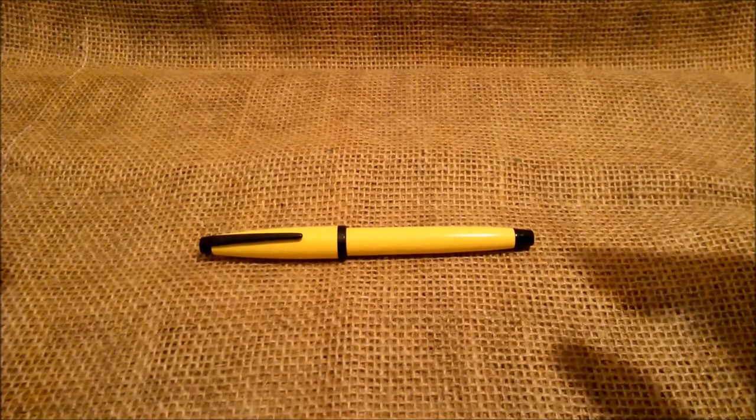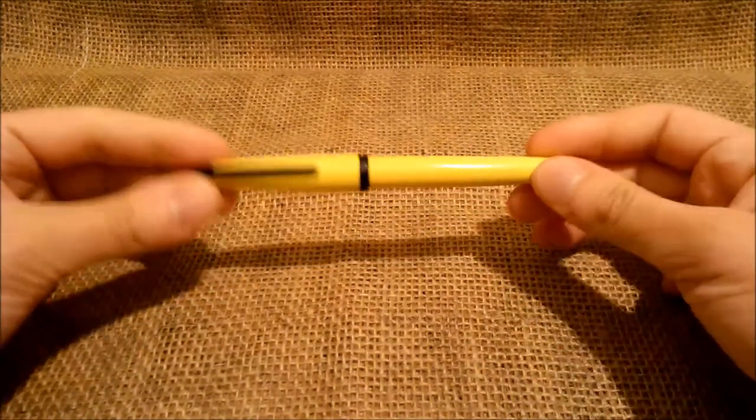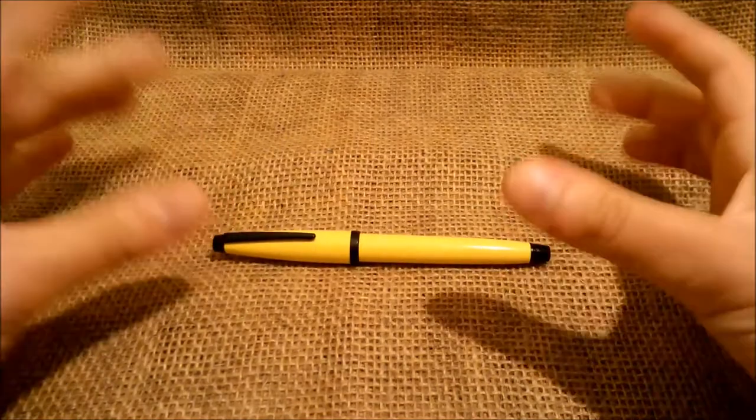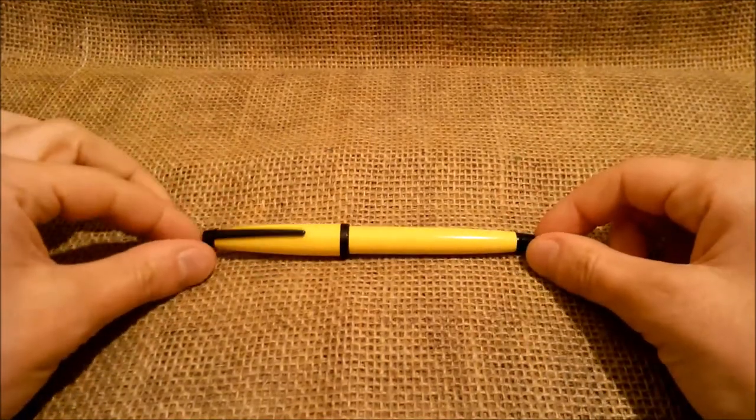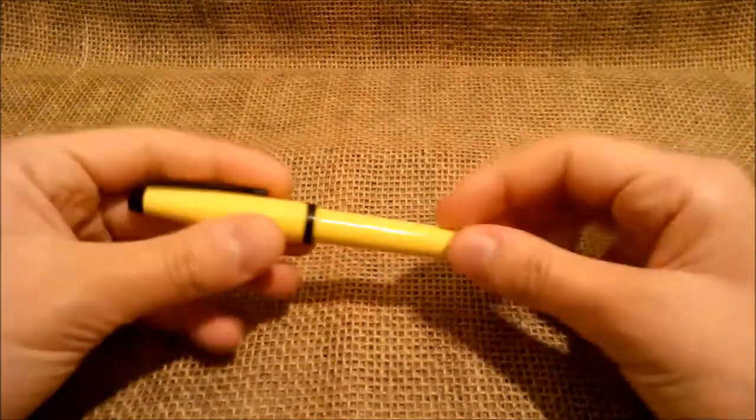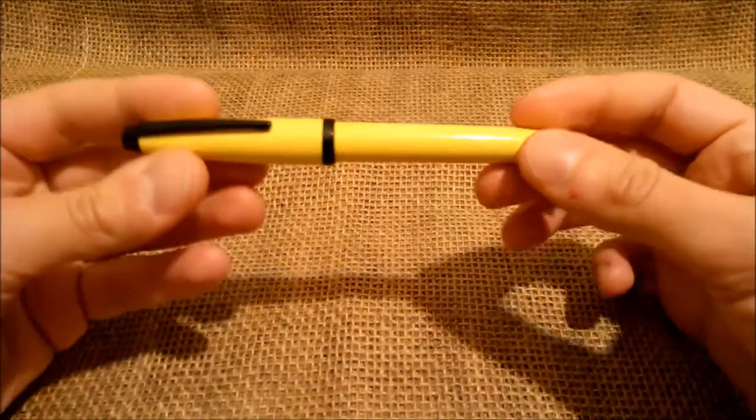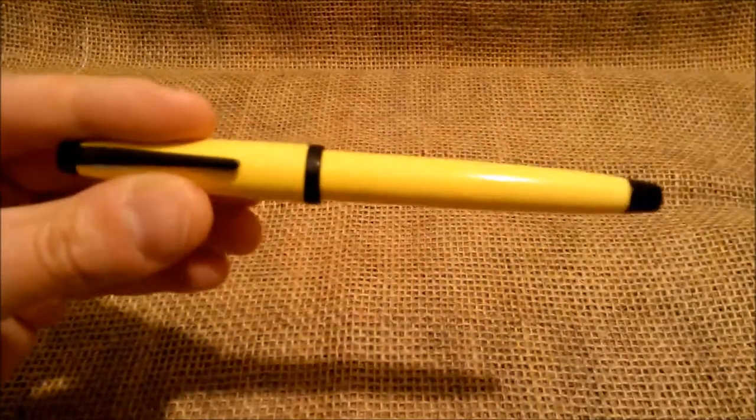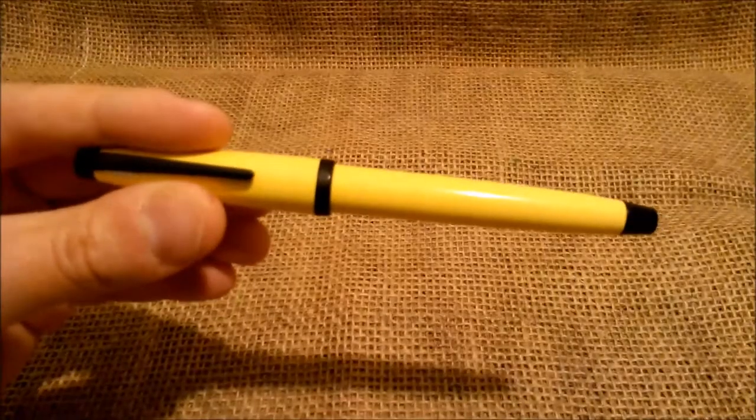And this pen is the Cross Solo pen. It is a pen made some years ago, we don't know exactly when, maybe in the 90s, we are not sure about this information. And it is a very nice little pen. It is made of plastic and it is a cheaper pen than the usual Cross range.